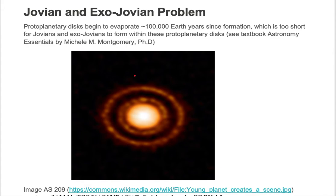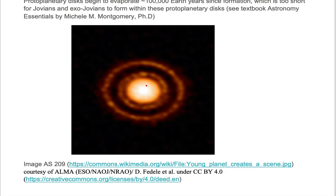Here we're looking at the AS209 system as seen from ALMA. We have a protostar forming in the center, and this protostar is surrounded by a protoplanetary disk shown in brown. This protoplanetary disk contains gas and dust. Notice this black region — it's a ring in the protoplanetary disk.